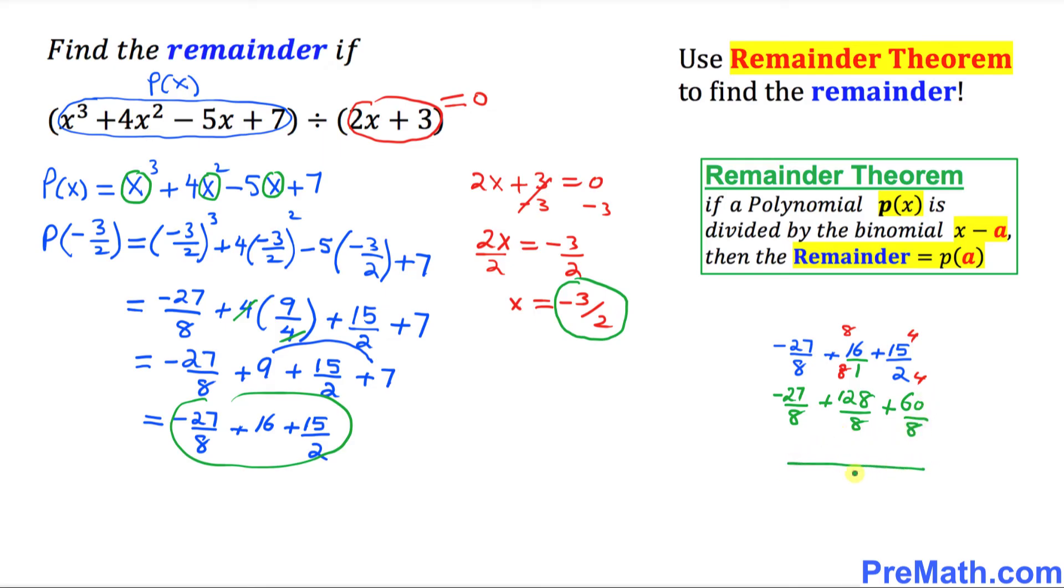Now we can see that we have the same denominator. Just write down negative 27 plus 128 plus 60. If you simplify the top part that is going to give you 161 divided by 8.